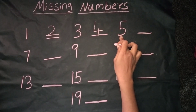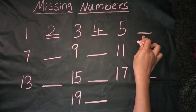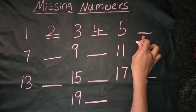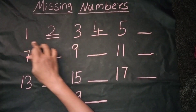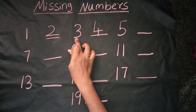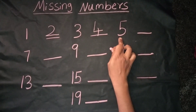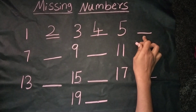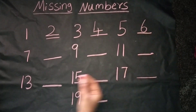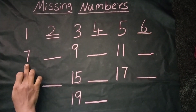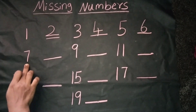The next number is — we should count from 1: 1, 2, 3, 4, 5, 6. Yes, it's correct. The number is 6. We can see the number 7.